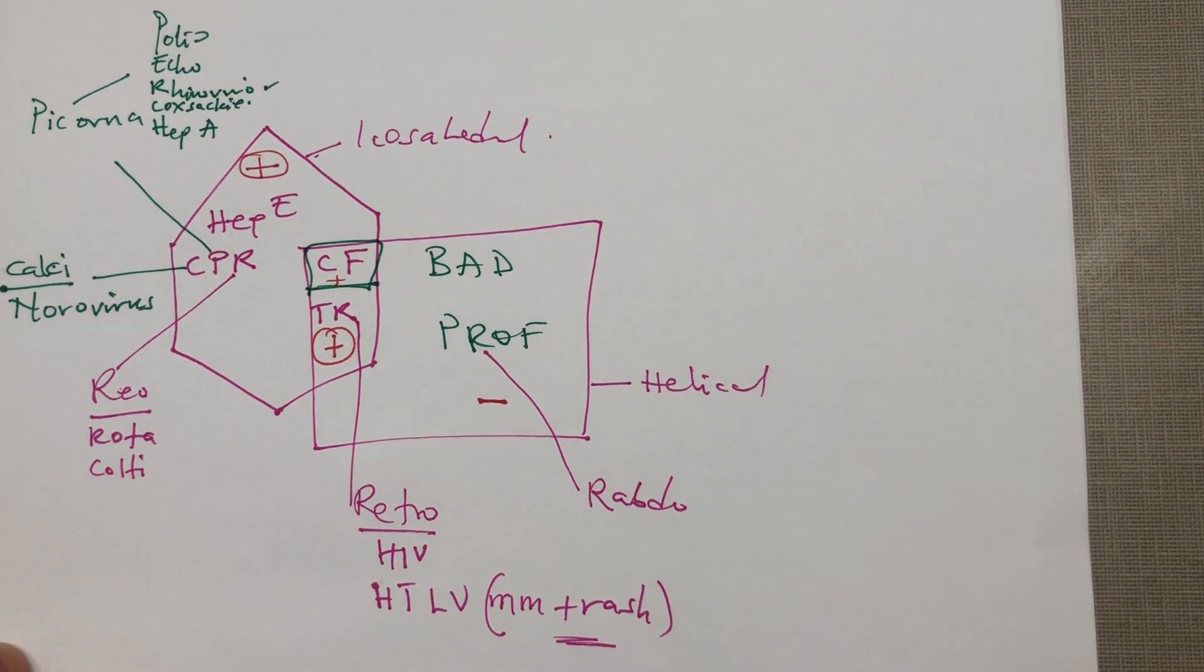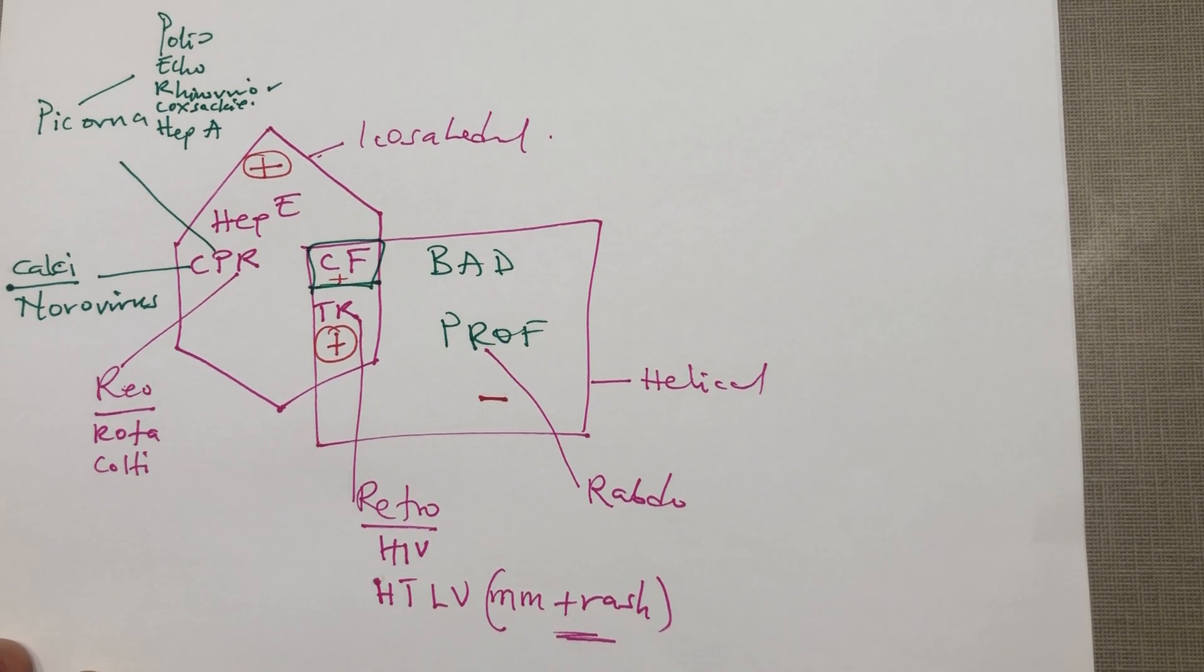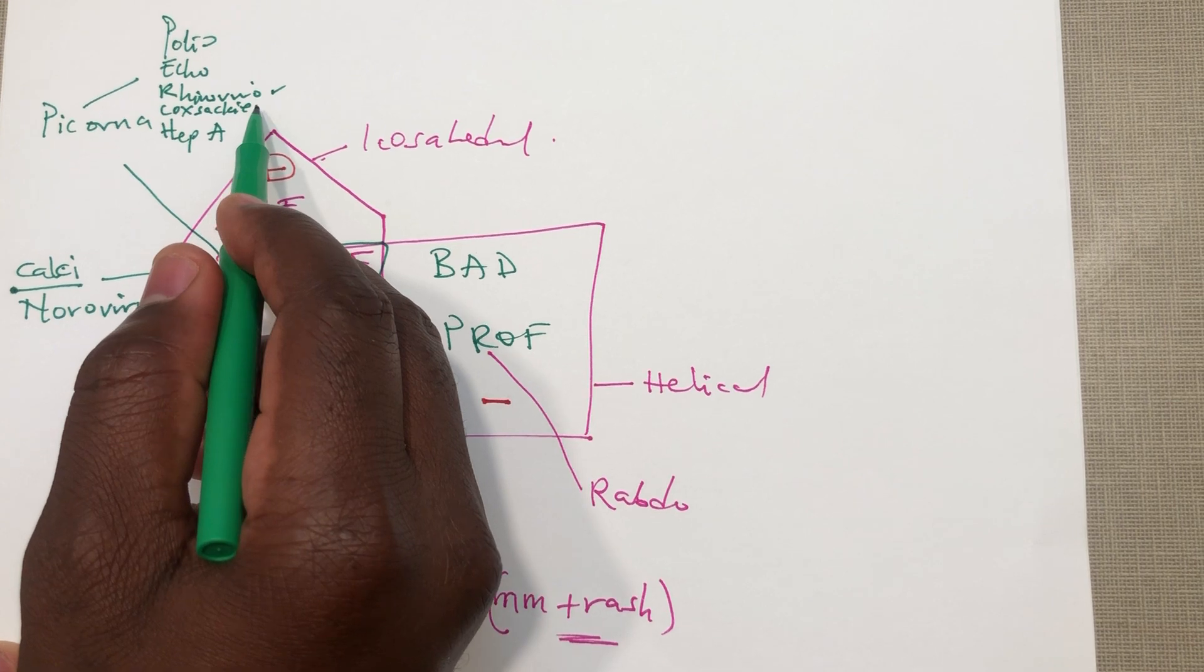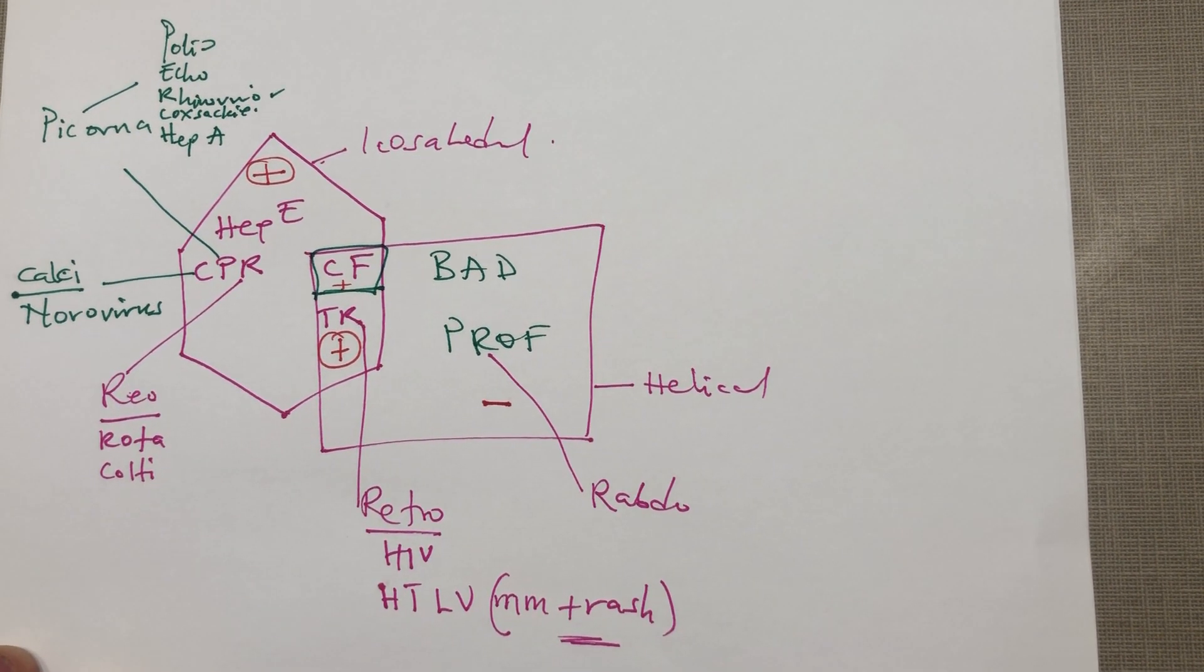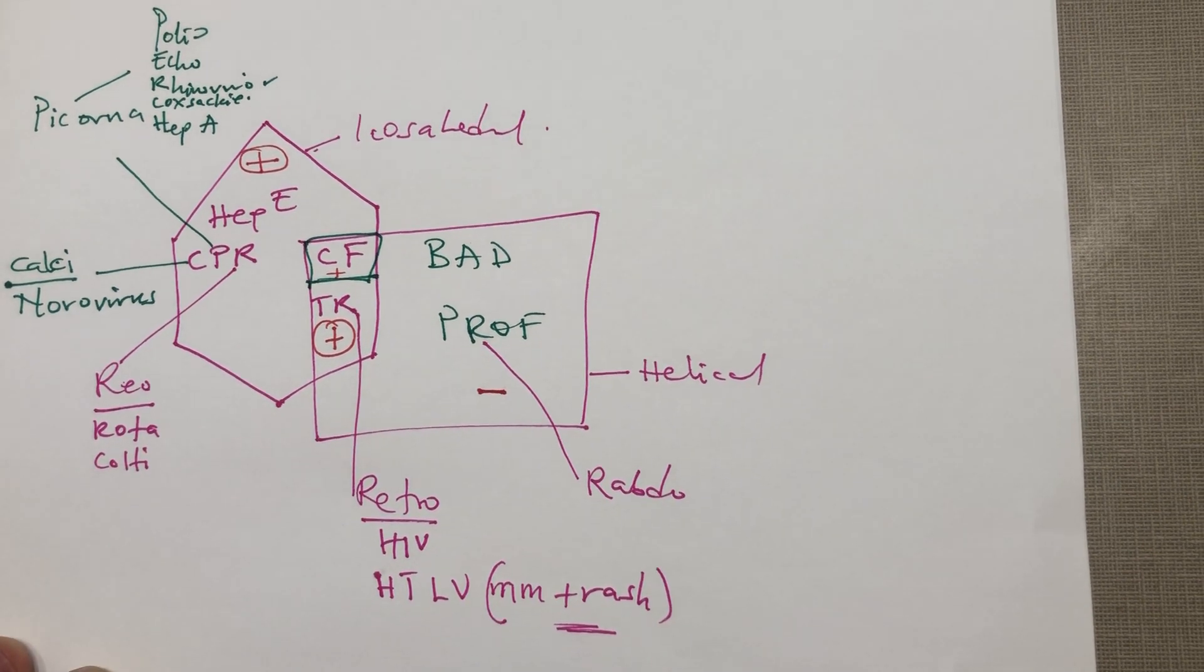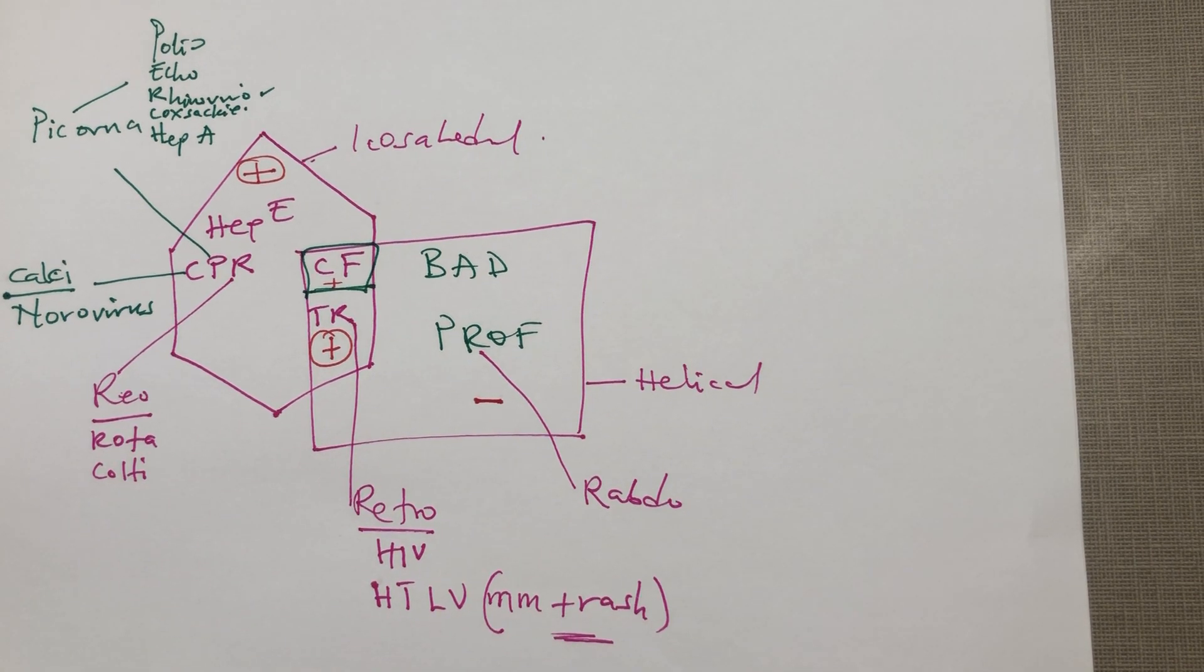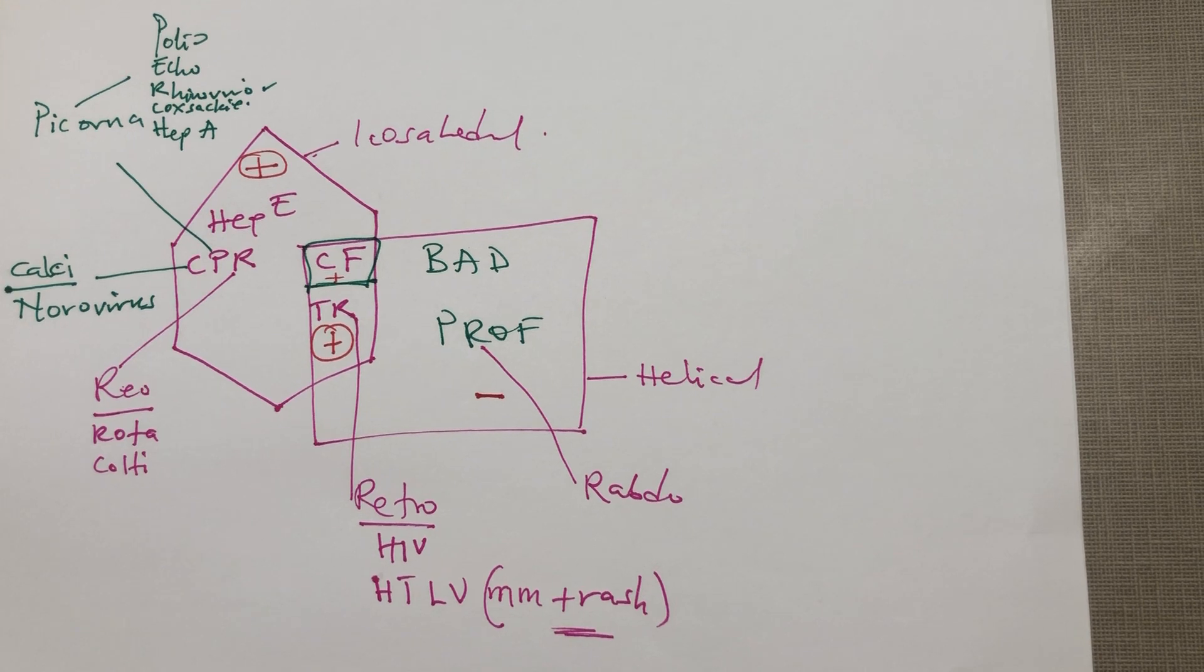All these are enteroviruses except the rhinovirus which does not affect the GI. Coxsackie will also present with a hand-foot-mouth disease and can also cause some viral myocarditis. Polio causes polio in usually some children and will affect the anterior horn of the spinal cord.